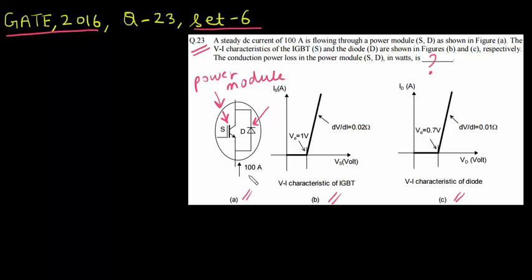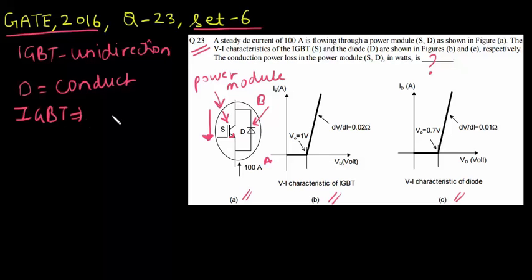So you know that your IGBT is unidirectional. It means that current can flow only in one direction, so current from the IGBT can flow like this only. But you can see that your 100 amp current is flowing from let's say A to B, so the only path it has is through the diode. So the diode will conduct, 100 amp current will flow in the power module from A to B, so your diode will conduct and IGBT will remain in OFF state.